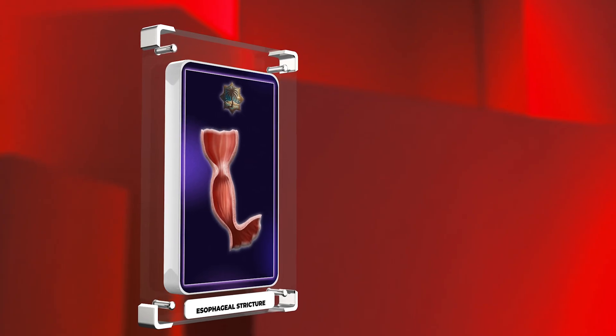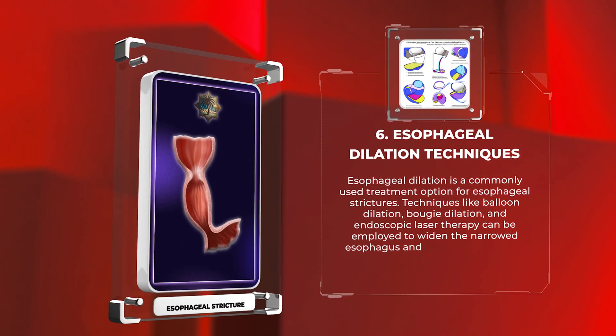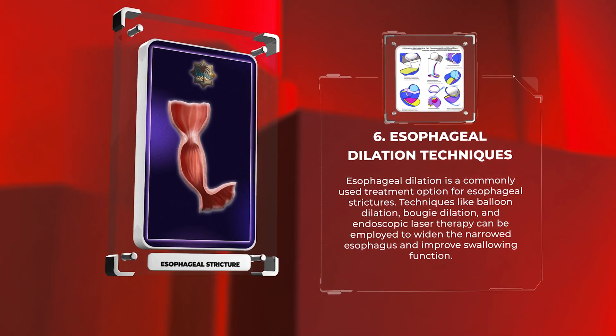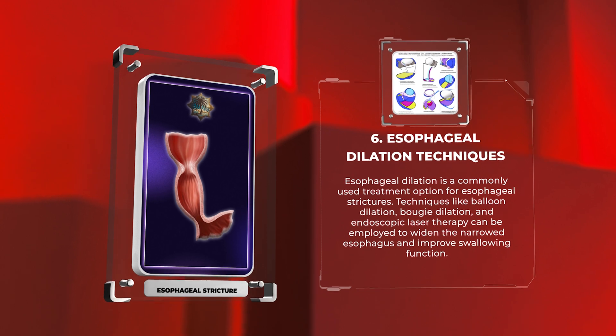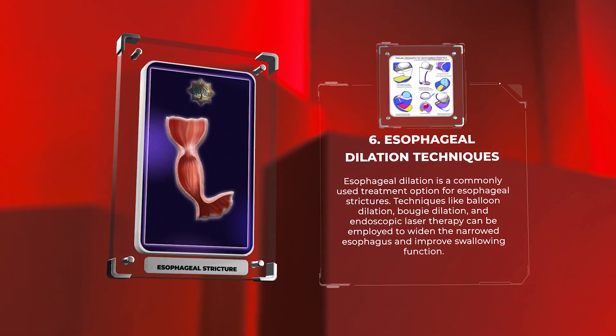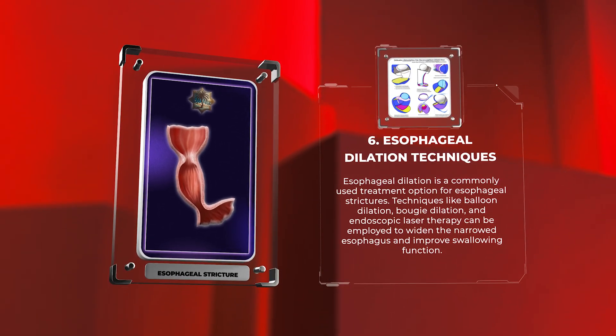Esophageal dilation is a commonly used treatment option for esophageal strictures. Techniques like balloon dilation, bougie dilation, and endoscopic laser therapy can be employed to widen the narrowed esophagus and improve swallowing function.